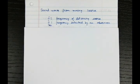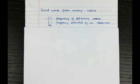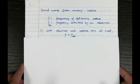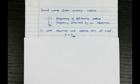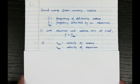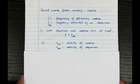Let's say f is the frequency of a stationary source and f-observer is the frequency detected by an observer. In the simple case we have studied so far, where both the observer and the source are at rest, f equals f-observer. What if we give the source and observer some velocity — denoted by velocity-source and velocity-observer?